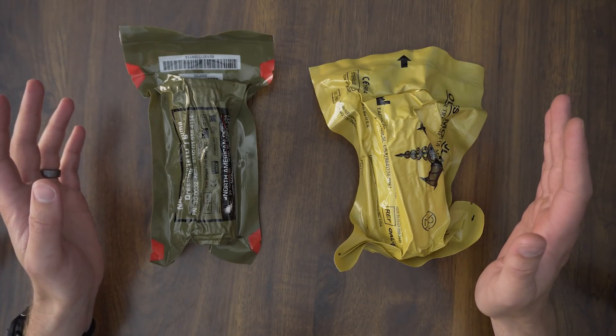So let's open these up and we'll take a look at how these are applied and the different features both have. So right away, if you're opening the North American Rescue, they've got the red tab and they call it a red tip technology. But really, it just shows you exactly where to tear to open it. And both are vacuum sealed.